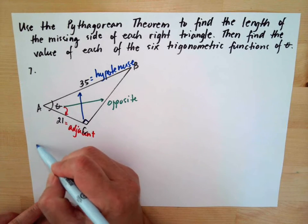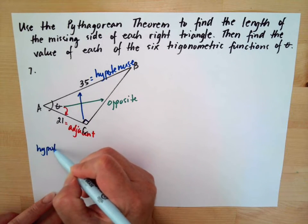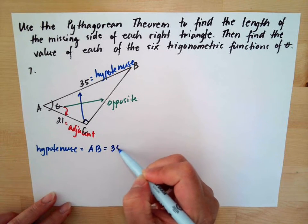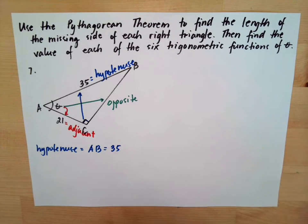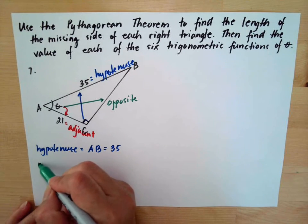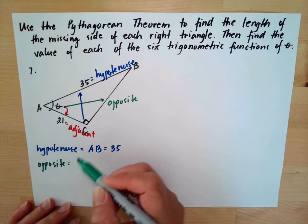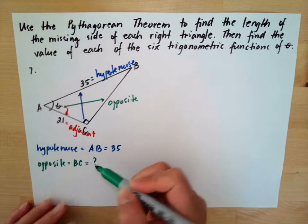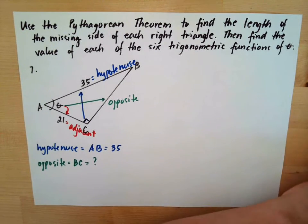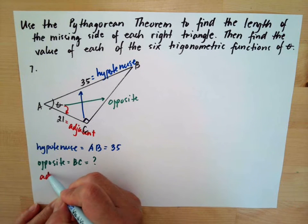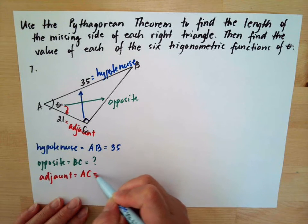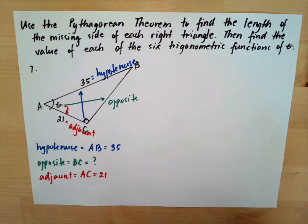So we have: hypotenuse equals AB which equals 35, opposite equals BC which is unknown, and adjacent equals AC which equals 21.